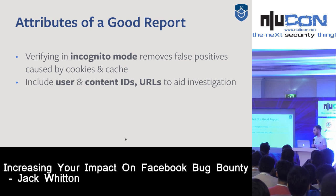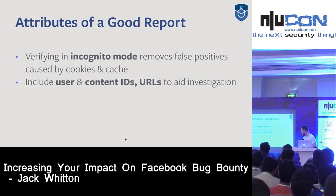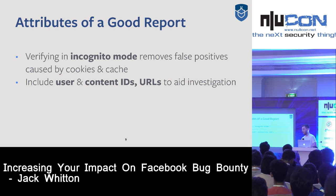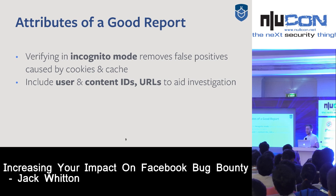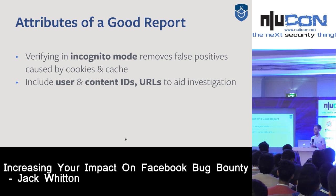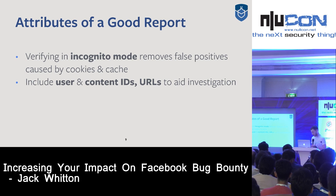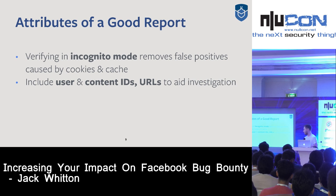Another good thing to include in your report is any user and content IDs that are relevant. One of the things we see is that specific accounts can have specific features enabled that aren't enabled for everyone, which can make debugging quite difficult. You can also include the full URLs — this really helps our investigation and speeds up triage quite quickly.